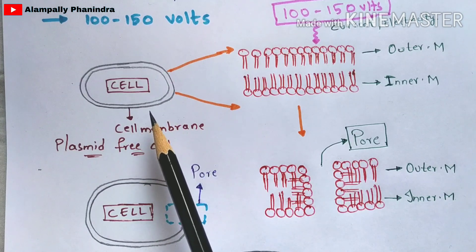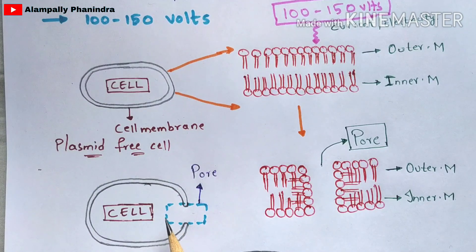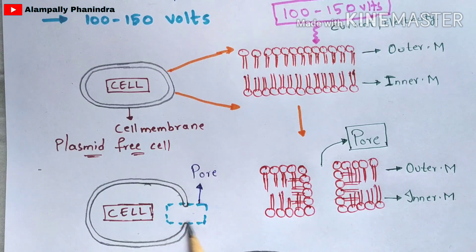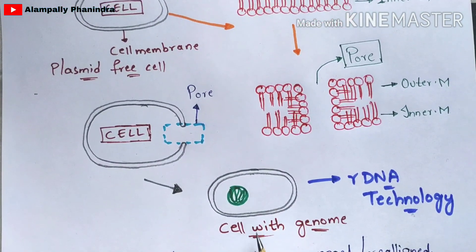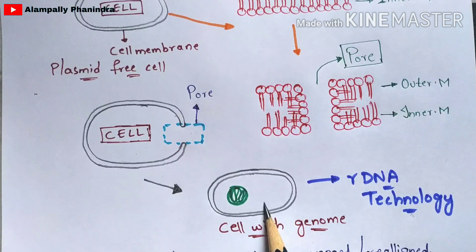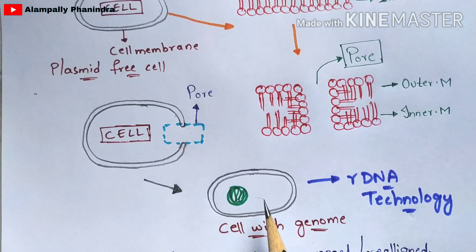We select plasmid-free cells because they don't contain any genome. Now we inject the genome of our interest — it depends on which type of genome we want. We inject that genome into the cell through the pore formed by the electric current. Once the genome is injected, this is called a cell with genome, or it can also be called a plasmid DNA bacterial cell.